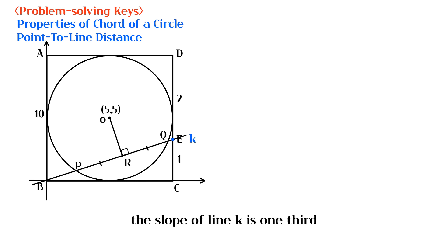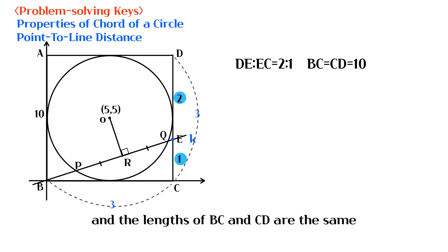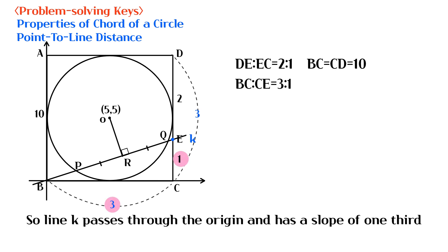The slope of line K is 1/3, because the ratio of lengths of DE and EC is 2 to 1, and the lengths of BC and CD are the same. So line K passes through the origin and has a slope of 1/3.